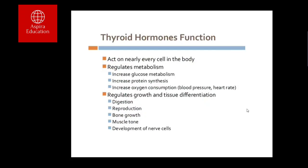Thyroid hormone acts on every cell in the body. It regulates metabolism by increasing glucose metabolism and protein synthesis, and also increases oxygen consumption, thereby raising the basic metabolic rate. In addition, it is required for tissue differentiation, digestion, reproduction, bone growth, muscle tone, and development.